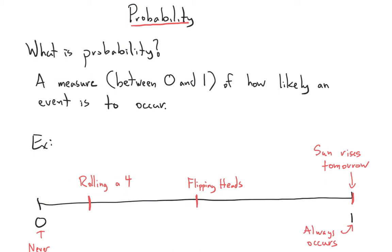Rolling a four on a six-sided die, well, there are six sides on a die. Only one of them is four, so you'd expect a probability around one-sixth for that. So we'll talk a little bit more about how to determine the probability of events, but this just gives you a nice overview of what probability is in a qualitative sense.